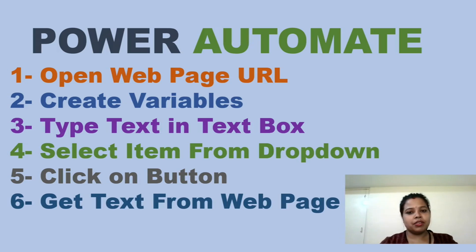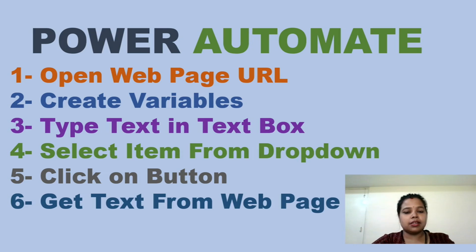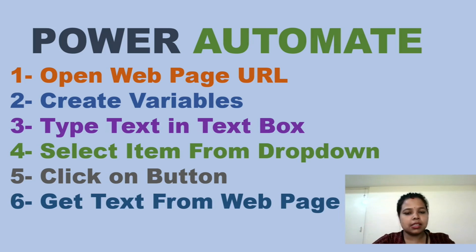Hi everyone, my name is Jitu. Today we are going to learn some points about Power Automate. We will learn how to open a URL, how to create a variable, how to type text in any text box, how to select an option from a drop-down, how to click on a UI element, and how to get text from a UI element. Let's start.